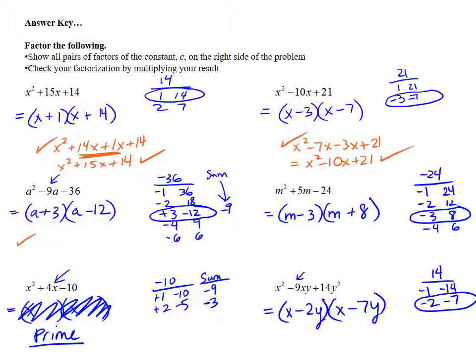Third example, the check. a times a is a squared. a times negative 12 is negative 12a. 3 times a is positive 3a. And then minus 36 for the last. Collect like terms in the middle, negative 9a minus 36. That's exactly where we started.